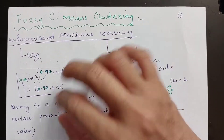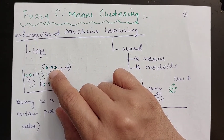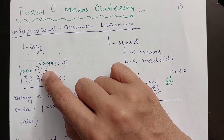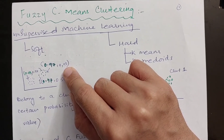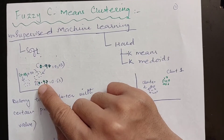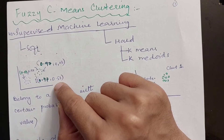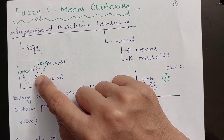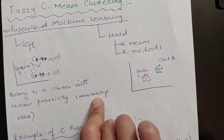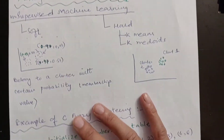In soft clustering, fuzzy c-means comes into play where there are some data points and we say that this data point has a probability of 0.97, or 97%, of being part of this cluster, but there is a 0.03% probability that this data point is part of the second cluster. Similarly, there is one data point which has a probability that it belongs 47% to this cluster, but there is also a 53% chance it belongs to the other cluster. When data points belong to a cluster with a certain probability, which we can also call the membership value, that type of clustering is called soft clustering and it comes in the domain of fuzzy c-means.